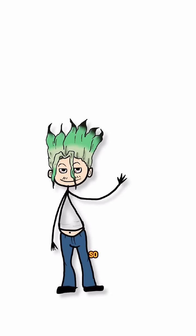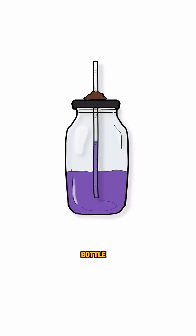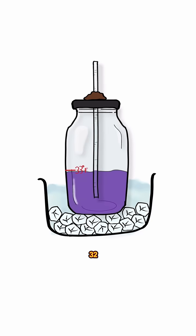Time to calibrate it so the numbers mean something. Put the bottle in ice water. Wait a minute, then mark the straw level as 32 degrees Fahrenheit, which is 0 degrees Celsius.